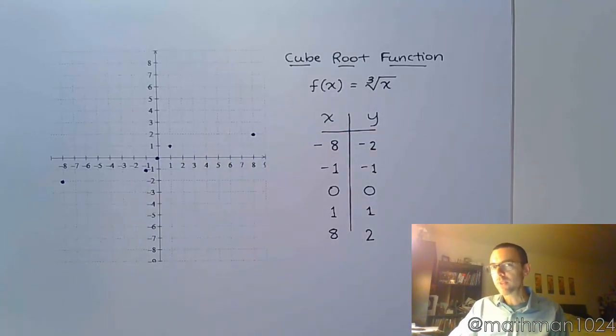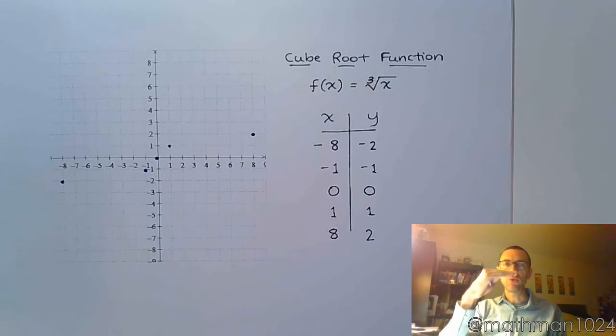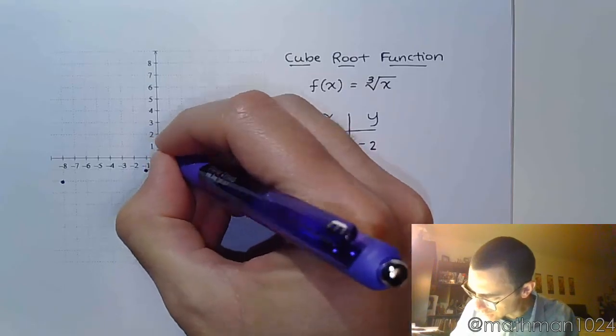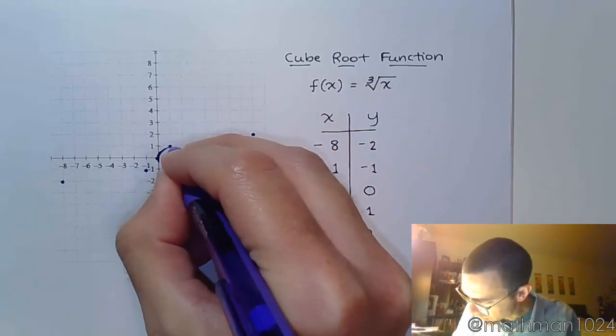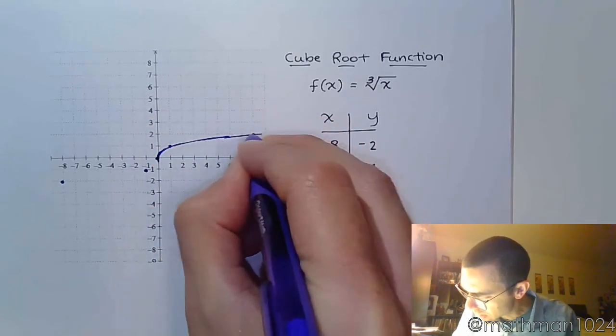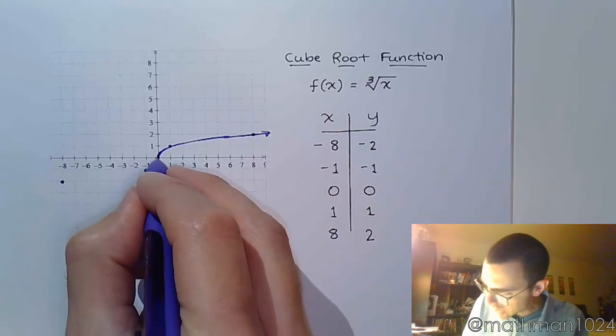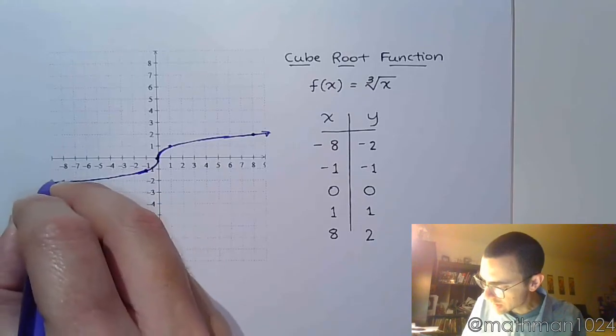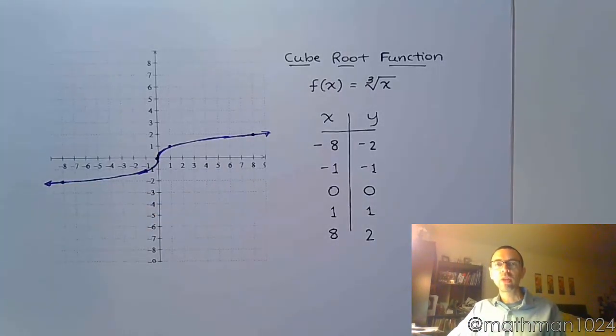So these points are very similar to what we saw for the cubing function, just oriented a little bit differently. Now for the cubing function, you were flat at the origin. For the cube root function, you're going to be vertical here for just a little bit, and then you're going to curve out like this, and you're going to curve down and to the left, like that. So that's what your cube root function looks like.